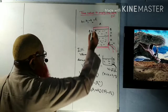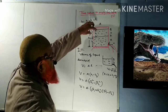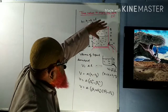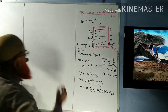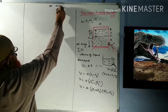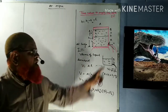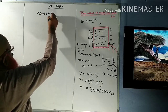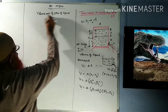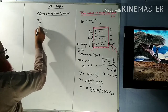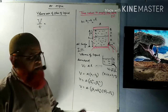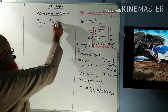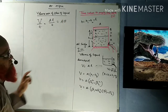Now we discuss what is happening at the orifice. The volume rate of flow of liquid is volume divided by time, which equals area into velocity. Here the area is small a (the orifice area). We get volume rate of flow equals small a times velocity.